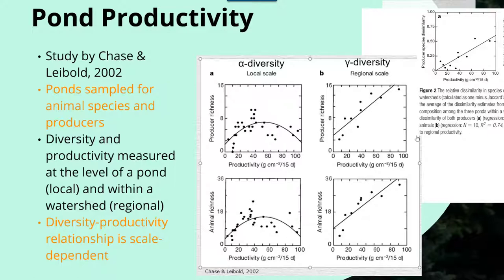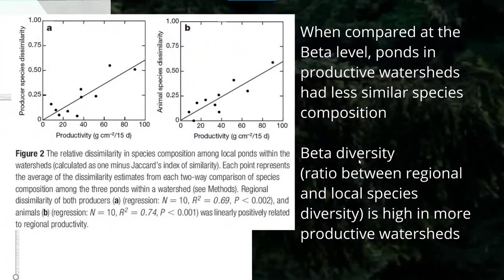We find that there's a relationship at these two different levels. However, when we look at the diversity at the beta level, the ponds in productive watersheds had less similar species composition. Beta diversity is the ratio between the regional and the local species diversity, and it's going to be high in more productive watersheds. So it didn't have the same relationship at this particular scale as it did at the micro and macro scale — this meso or middle scale had a different relationship and pattern in the data.